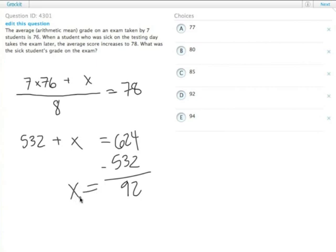So x equals 92. The sick student apparently used his or her extra time recovering to his or her advantage. Answer choice D.